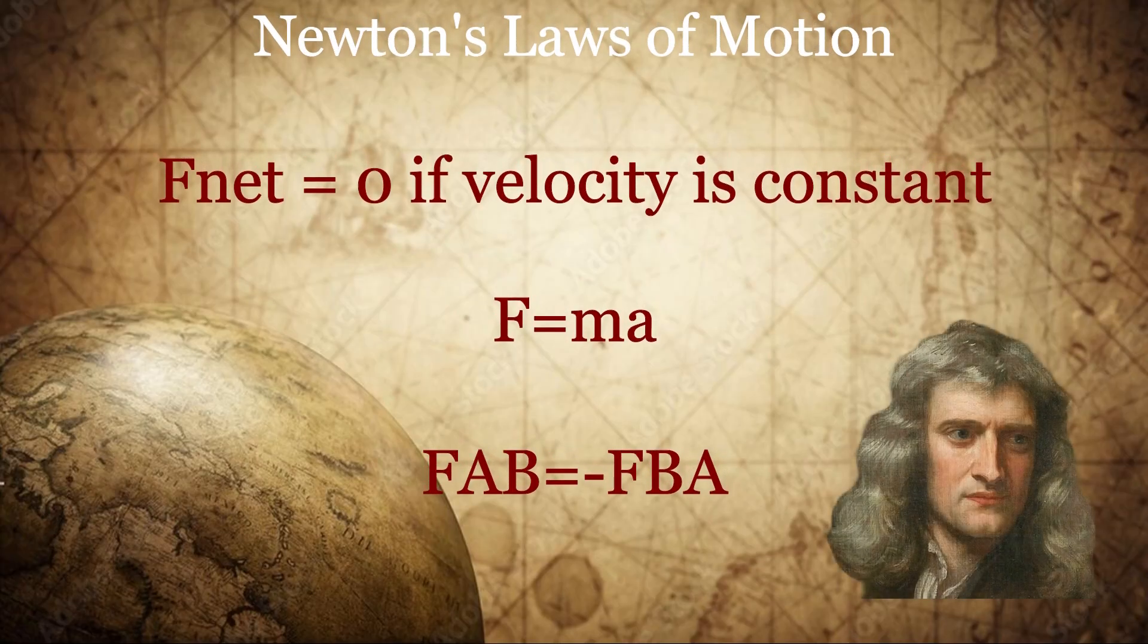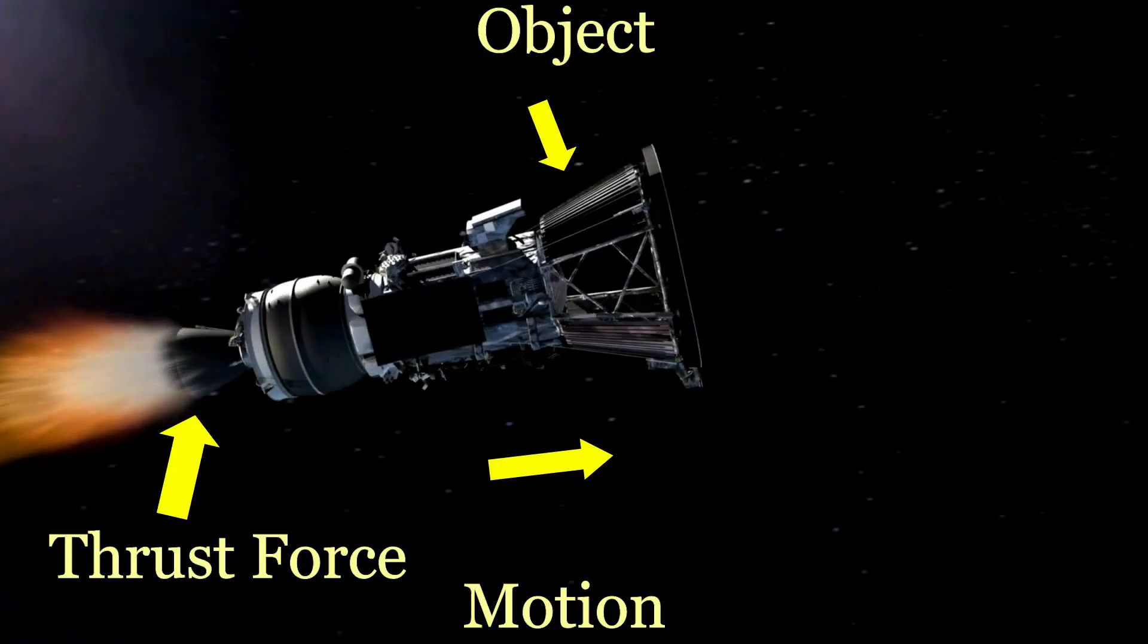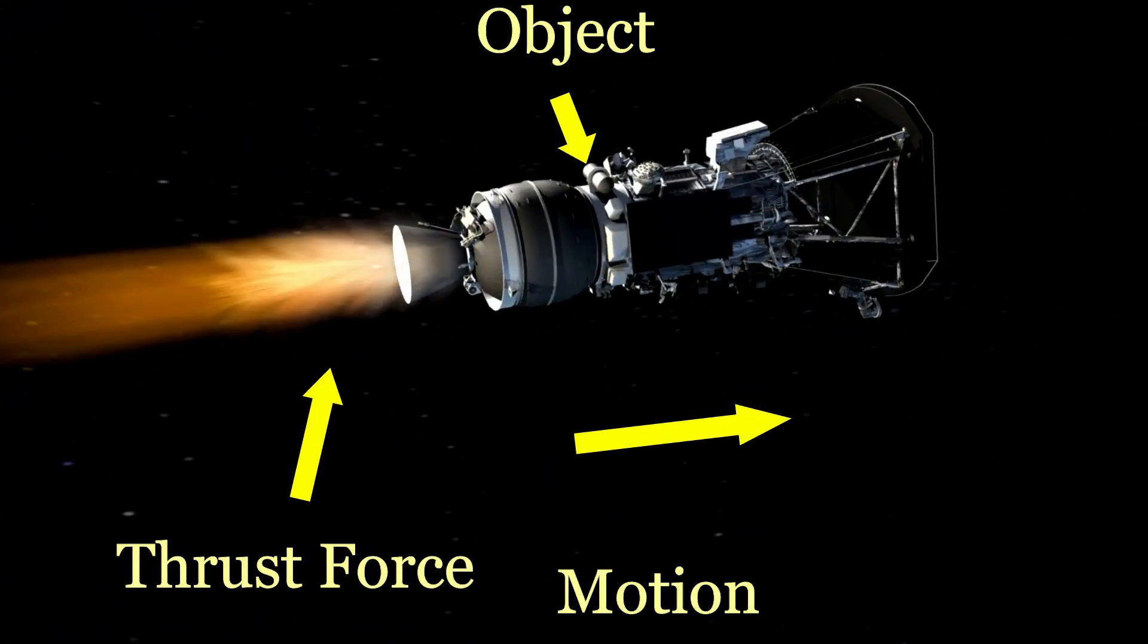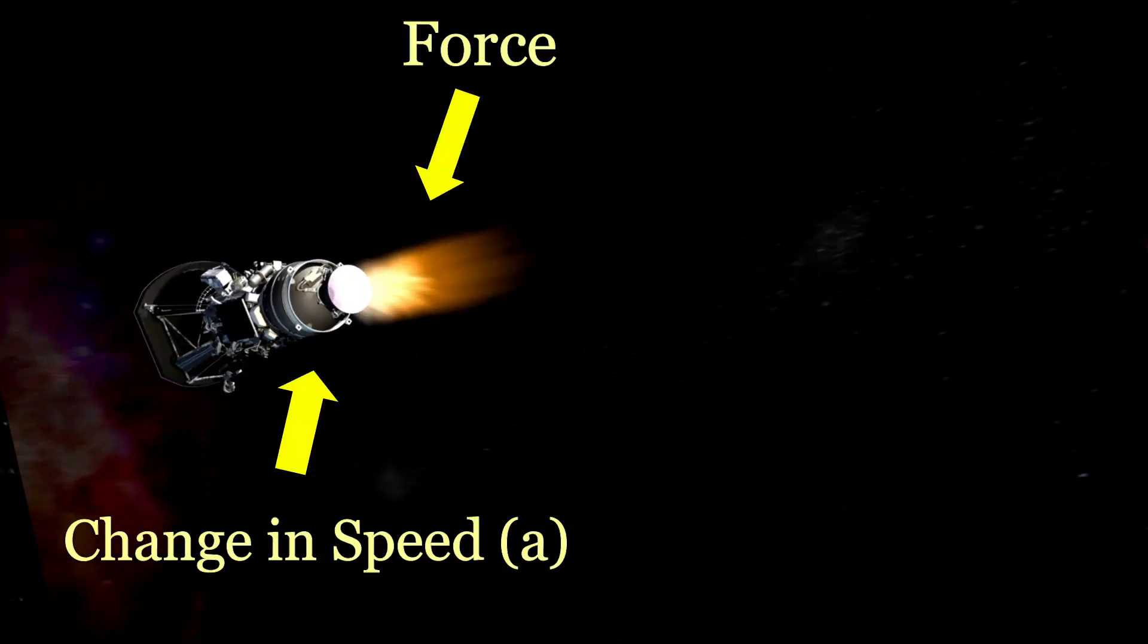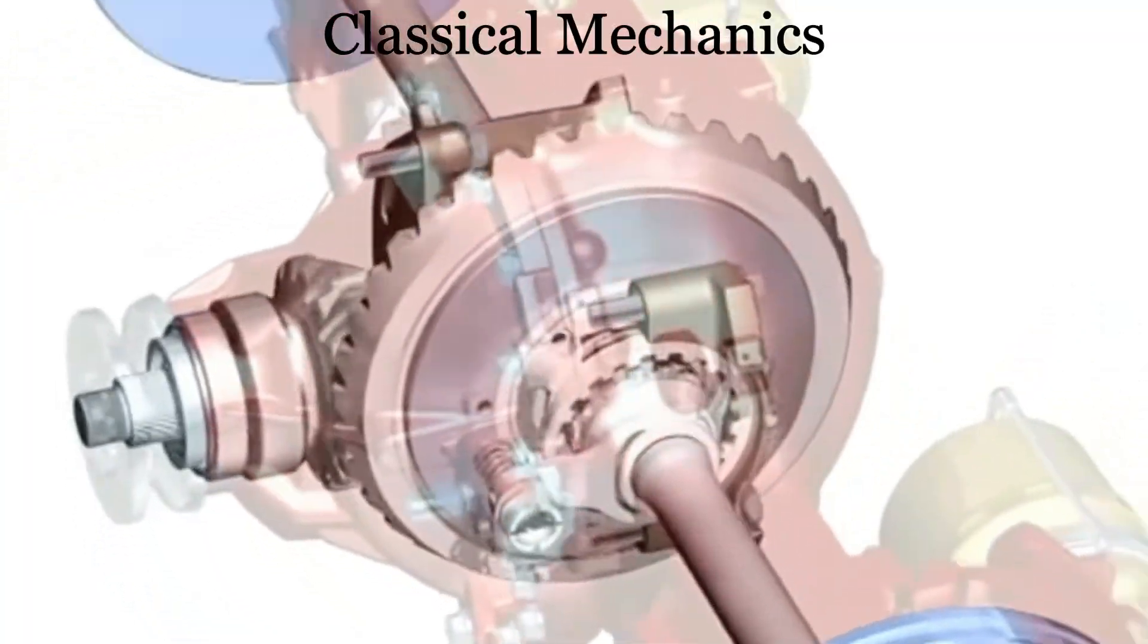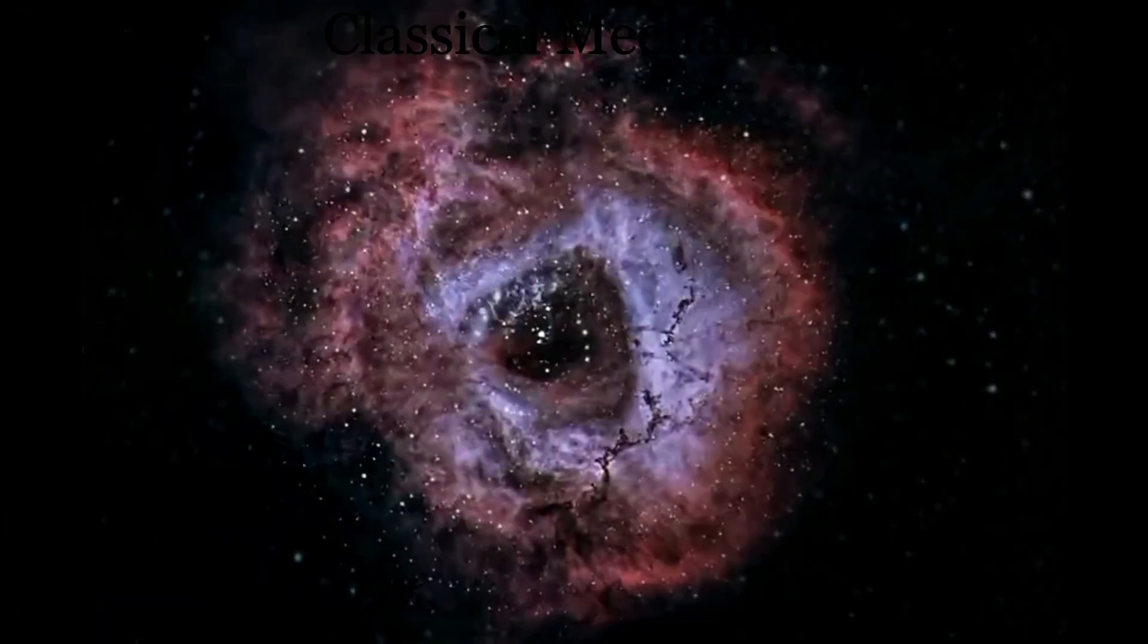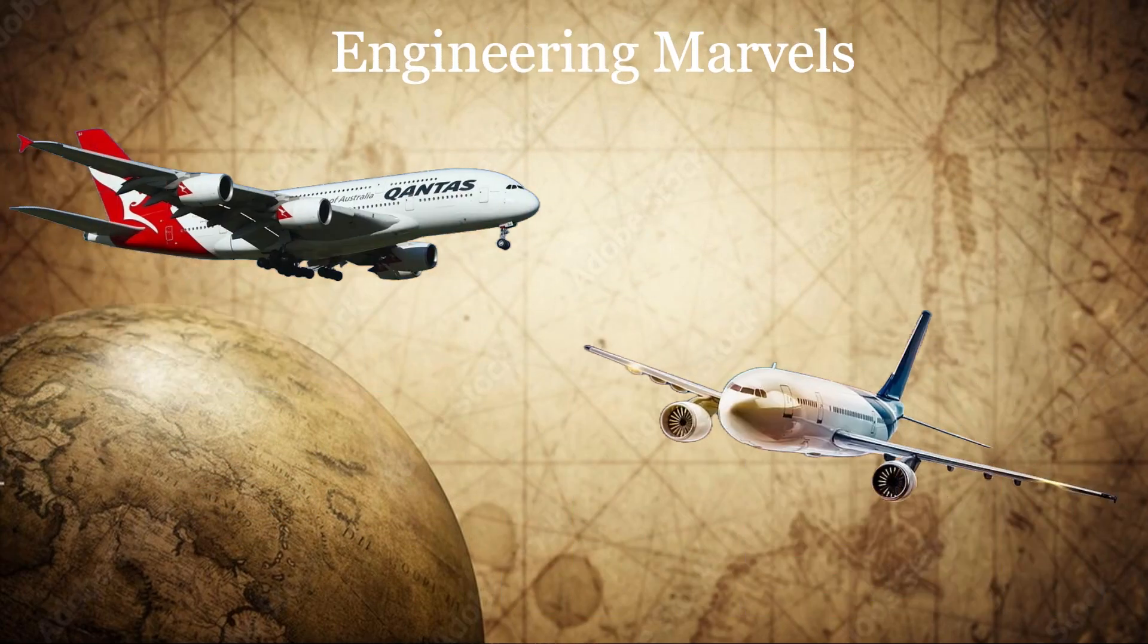Newton's laws of motion: These three laws describe the relationship between objects, forces, and motion. They explain why objects resist changes in their state of motion, how acceleration is influenced by force, and the concept of equal and opposite reactions. These laws are the cornerstone of classical mechanics, forming the basis for countless engineering marvels like bridges, airplanes, and rockets.